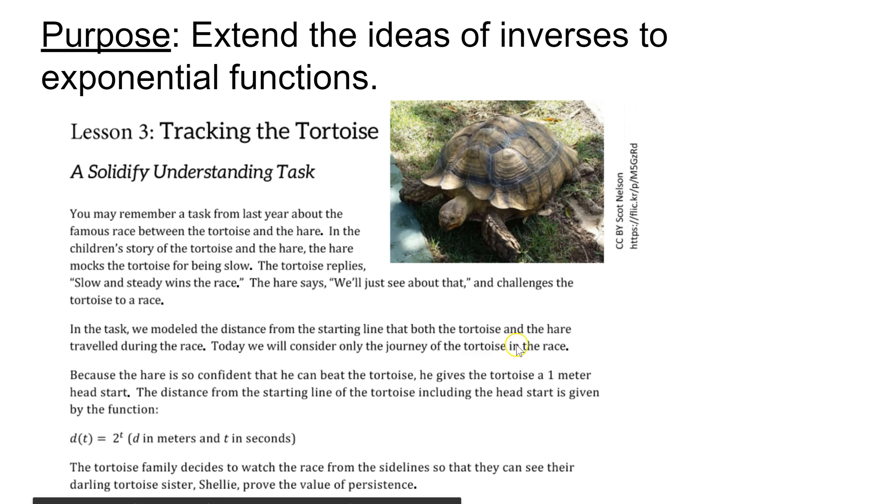To do that, we're going back to Math 1, where we learned about Shelley the tortoise in a race against the hare, and her path, which can be modeled by d(t) = 2^t, where d is in meters and t is in seconds. Shelley's been given a 1 meter head start since the hare was cocky, and her family has come along to watch her.